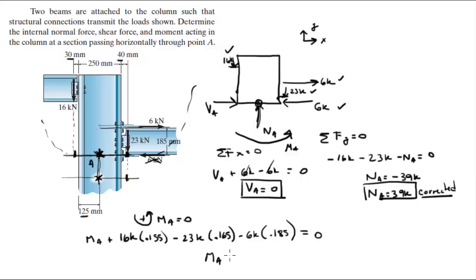So MA is equal to, when you solve for MA, 2.425 going counterclockwise because it's positive and we were assuming that counterclockwise was positive. So final answer for the moment, final answer for the shear, final answer for the normal.